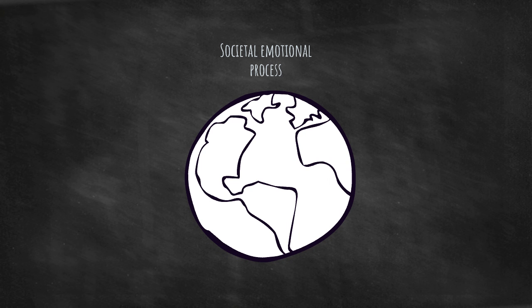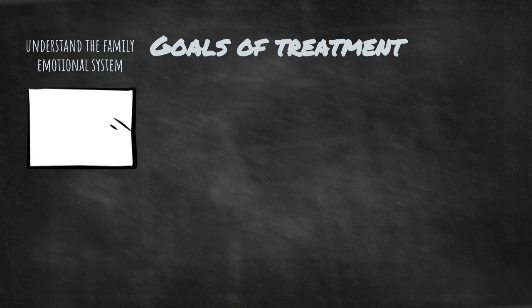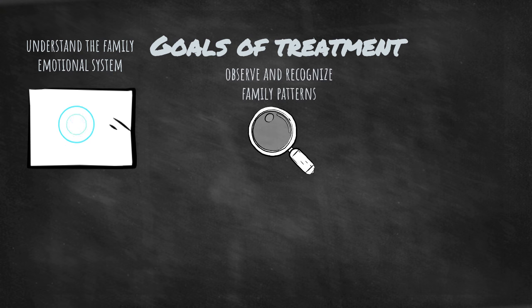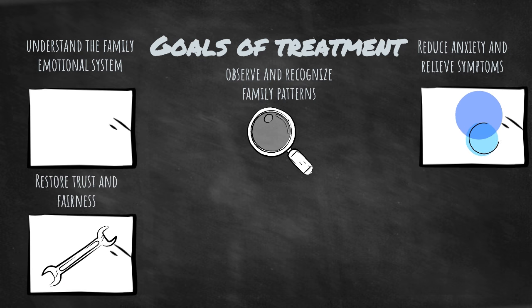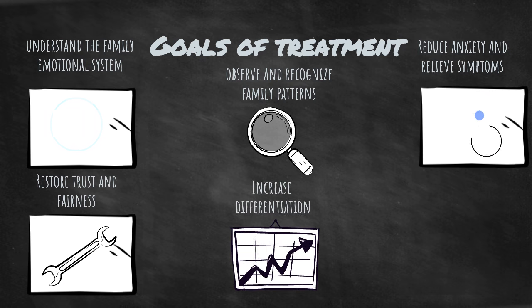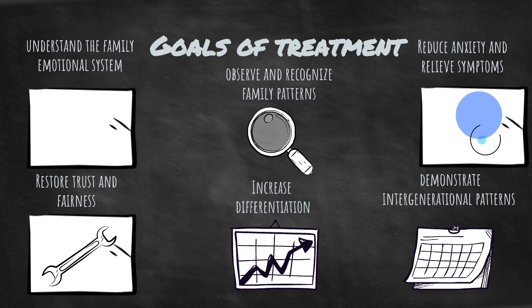The concept of societal emotional process describes how the emotional system governs behavior on a societal level, promoting both progressive and regressive periods in society. Goals of treatment include understanding the family emotional system, observing and recognizing family patterns, reducing anxiety and relieving symptoms, restoring trust and fairness, increasing differentiation, and demonstrating intergenerational patterns.